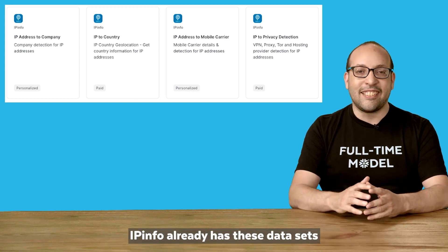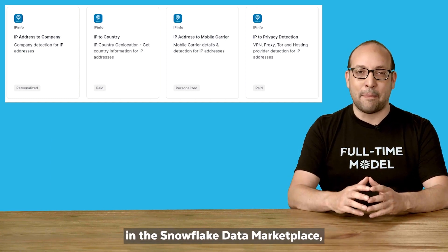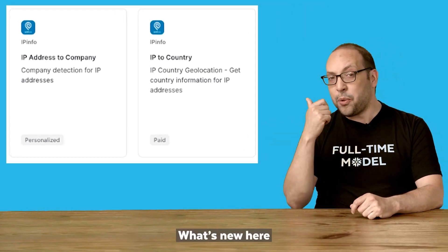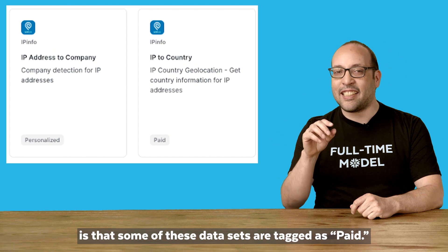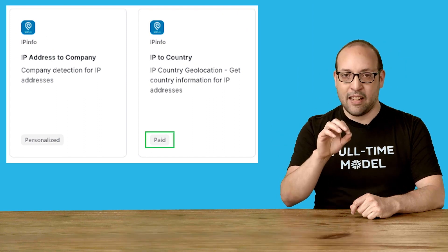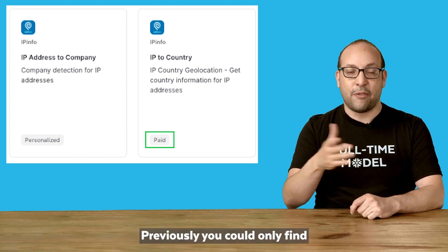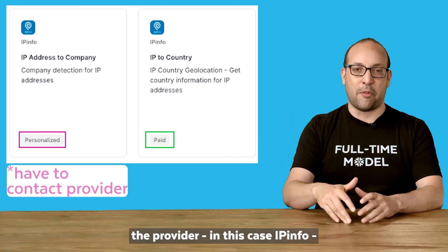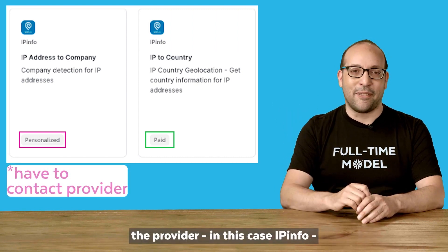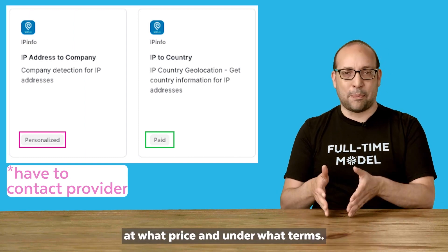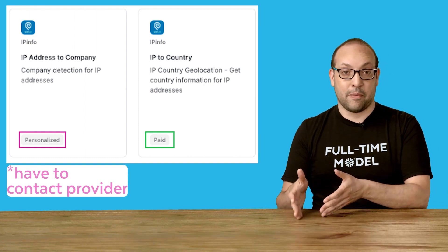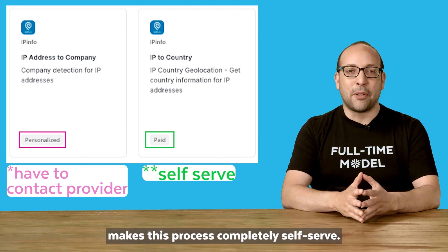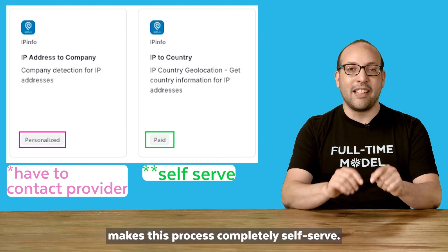IPinfo already has these datasets in the Snowflake data marketplace, and you can find them with a quick search. What's new here is that some of these datasets are tagged as paid. Previously, you could only find free datasets and personalize, with the latter meaning you had to contact the provider, in this case IPinfo, to agree on what data, at what price, and under what terms. Now with paid datasets, Snowflake makes this process completely self-serve.